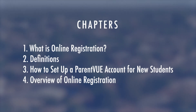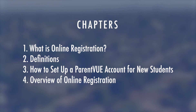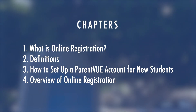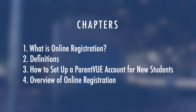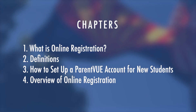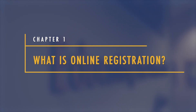This video is designed to help a parent or guardian register their child for school using the new online registration system. It may be watched from start to finish or by specific chapter as listed. To skip a chapter, simply move your cursor along the video progress bar, or please see the time codes in the description below.